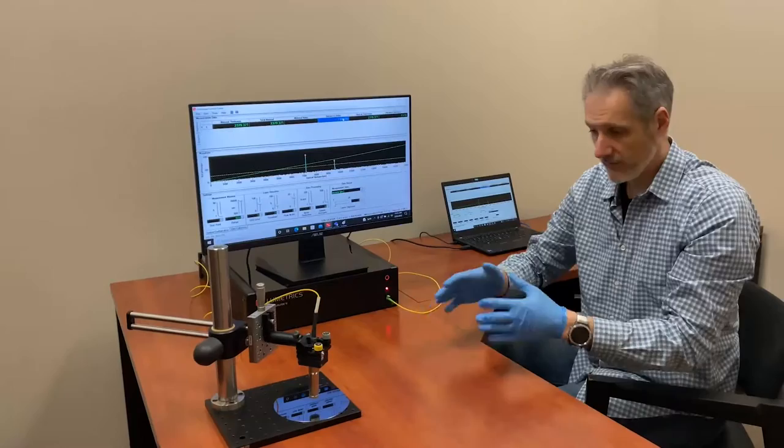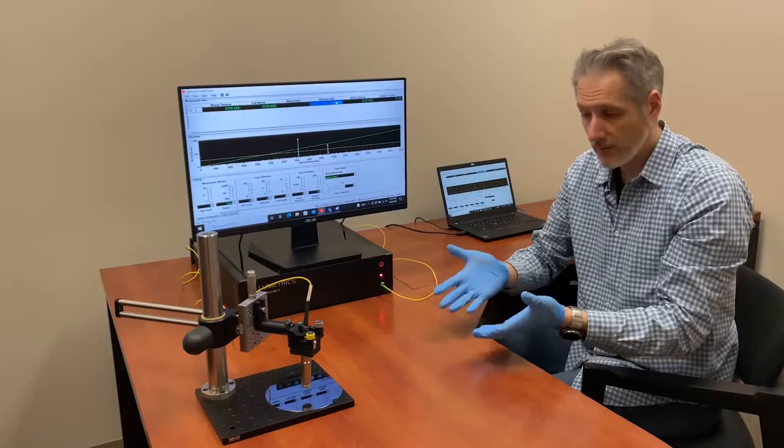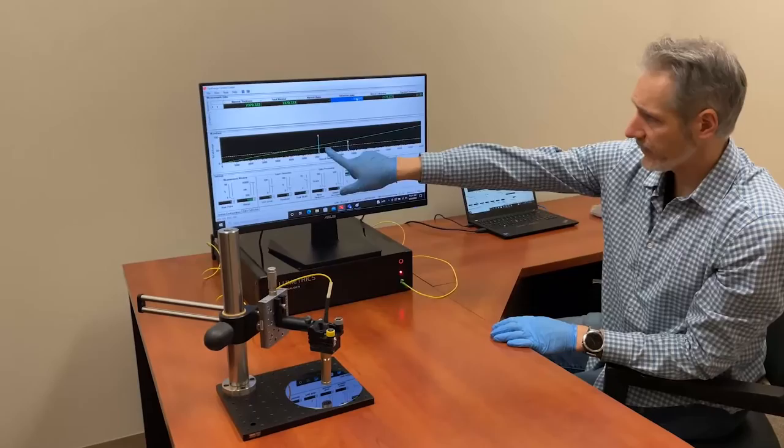It's a flat surface but you may have a vacuum chuck or something else you would use to help restrain your sample. Already you can see the reflection off the top surface and then the reflection off the back surface of the silicon.